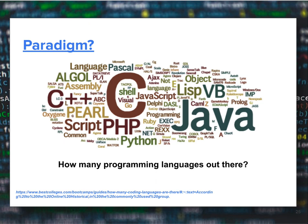Have you ever thought about how many programming languages exist? According to a source — the link has been provided — there are around 8,900 programming languages in existence. However, only less than 250 of them are commonly used, and the ones shown in that figure are the ones we normally use.